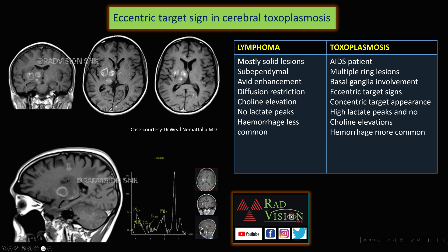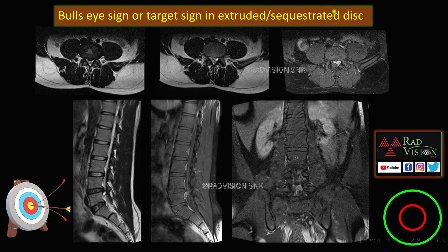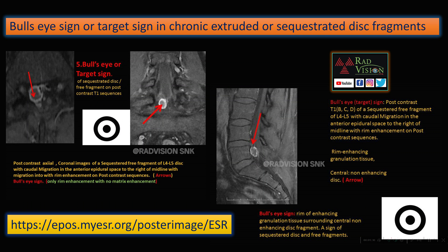Next target sign: the bullseye sign or target sign in extruded or sequestrated disc material. Here you can see this is the extruded disc showing peripheral rim enhancement and a central hypo-enhancing area, called the bullseye pattern or target sign. Whenever you are in doubt whether this is extruded or sequestrated disc material versus a neurogenic neoplasm, advise contrast. If you see this bullseye sign with peripheral enhancement — which is granulation tissue — and a central hypo-enhancing area — which is the disc material — it is classical for chronic extruded or sequestrated disc material and is not typically seen in neurogenic neoplasms or metastases.